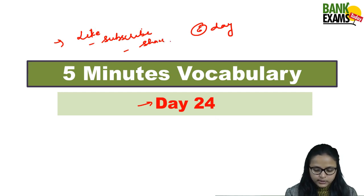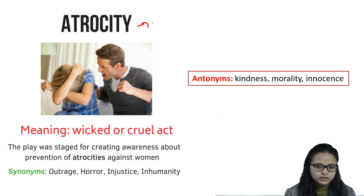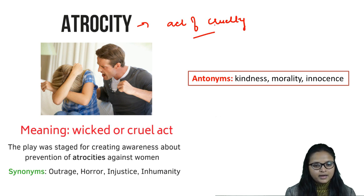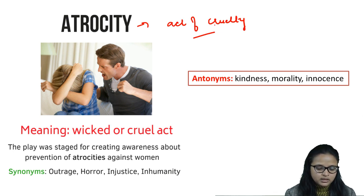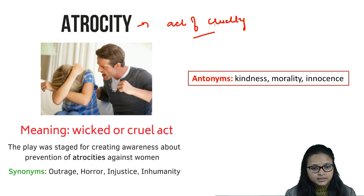Let's start with the first word, which is 'atrocity.' Atrocity is a word that defines an act of cruelty — it means an act that is likely to cause harm to you or some other person. For example, atrocity at home: some women are beaten by their husbands, or some children are beaten by their parents — that is called atrocity.